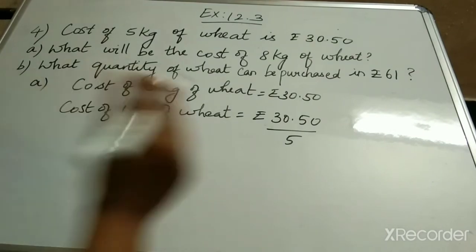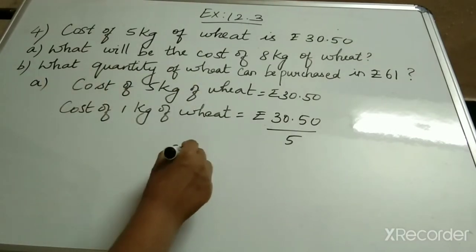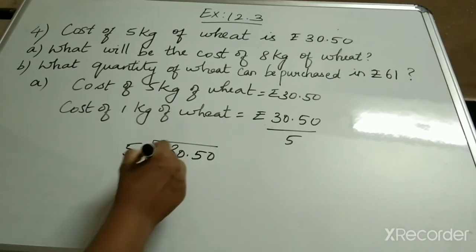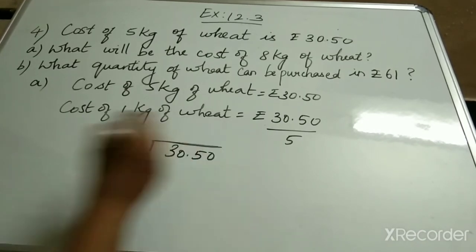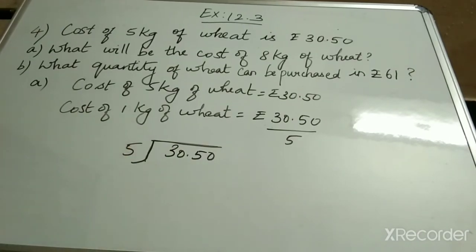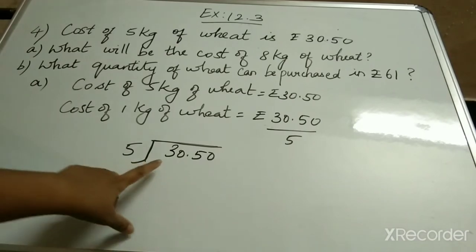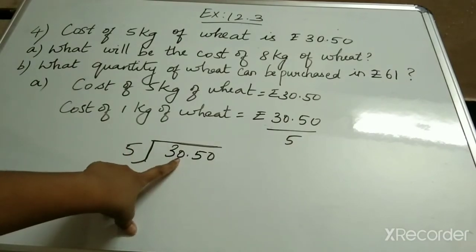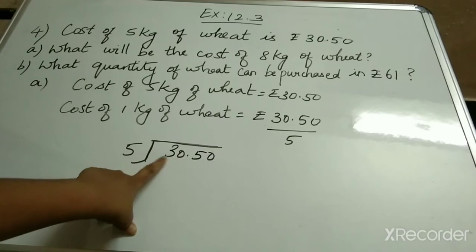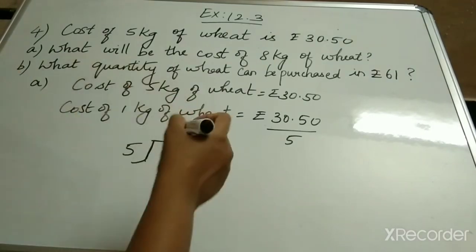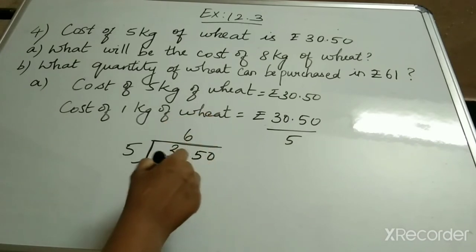Clear children? So, 30.50 divided by 5. When you divide, first you have 3, which is lesser than 5, so you can't take 3. Next we have 0, so I take 30. 5 into 6 is 30, so 5 sixes are 30.